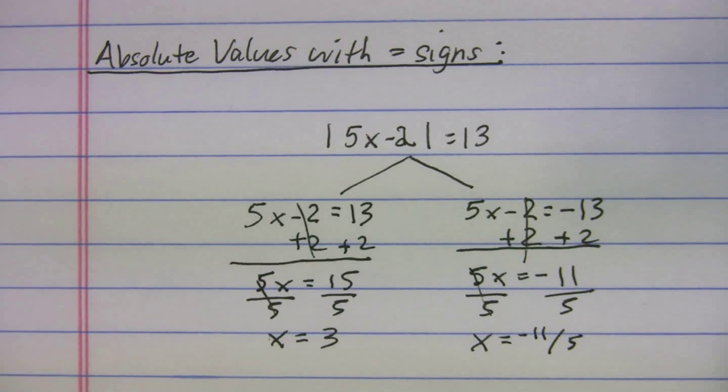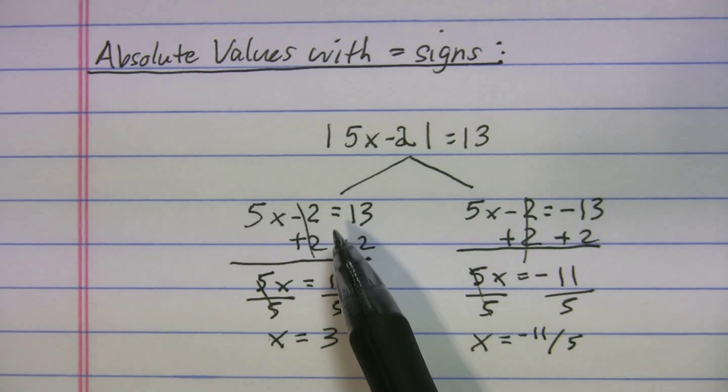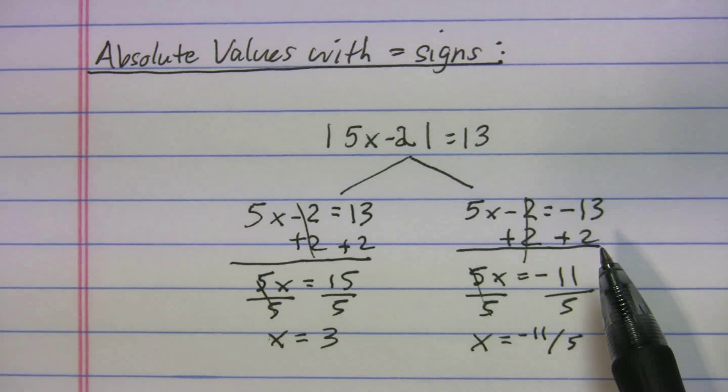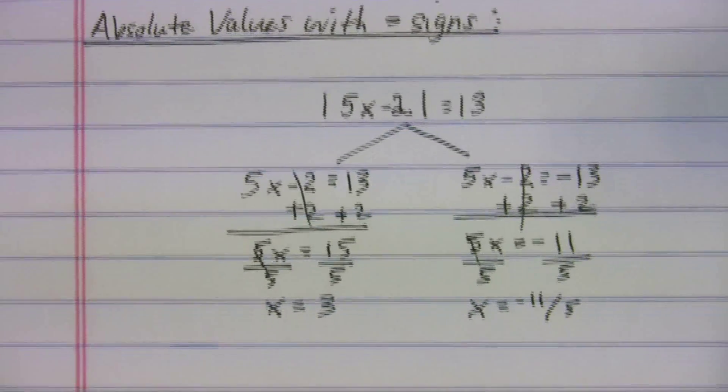So there are your two solutions. And that's all you're going to do when you get an absolute value with an equal sign. You're going to do your positive version and your negative version. Set it equal to the negative number. Let's do another one.